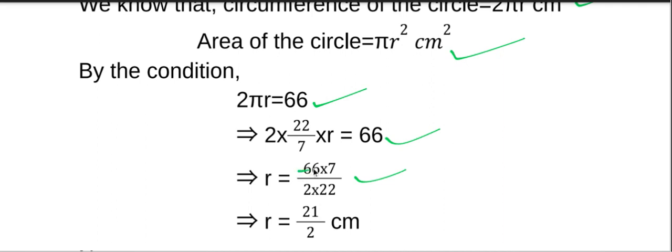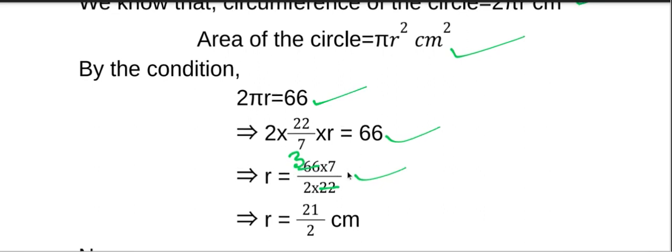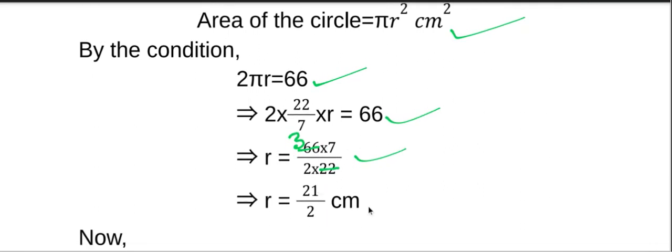Dividing 66 by 22 gives 3, and 3 × 7 = 21, divided by 2. So the radius of the circle is 21/2 centimeters.